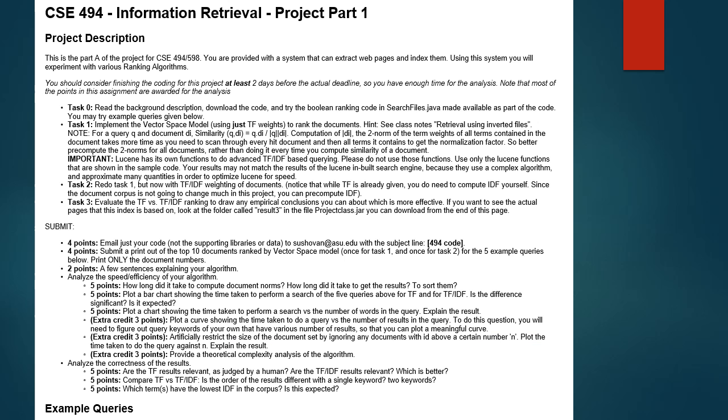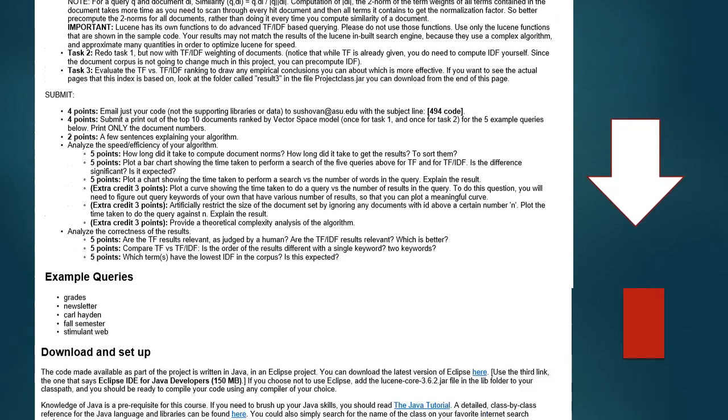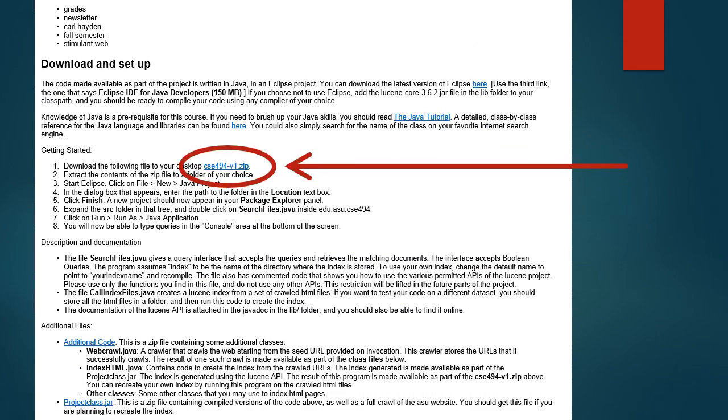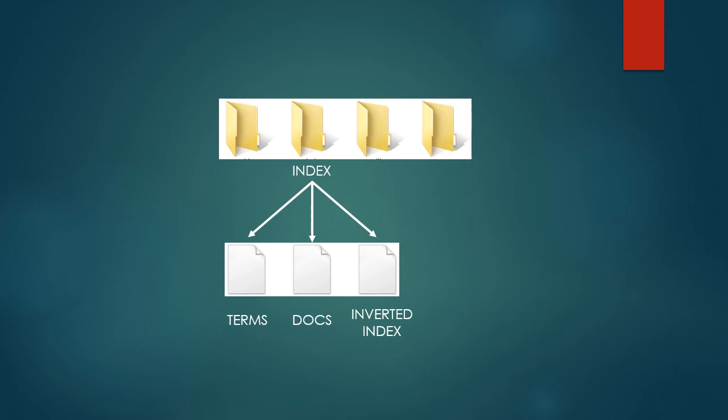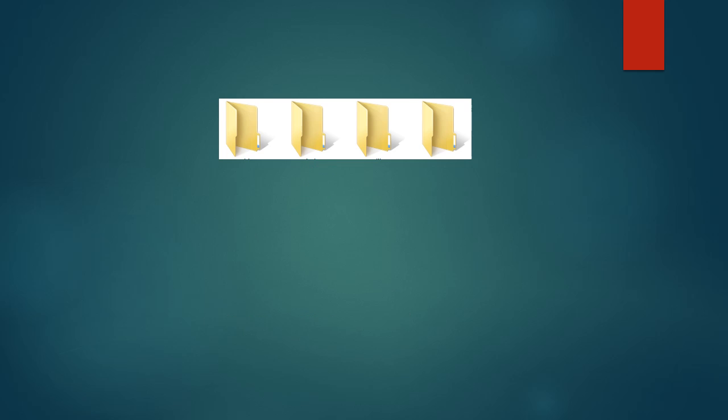To begin with, read through the problem statement and then download the source code from the project page. The bundle that you downloaded contains a number of things. It has a Lucene index which contains all of the information that Lucene needs to perform searches and it also contains a piece of sample code that you can use as your starting point.